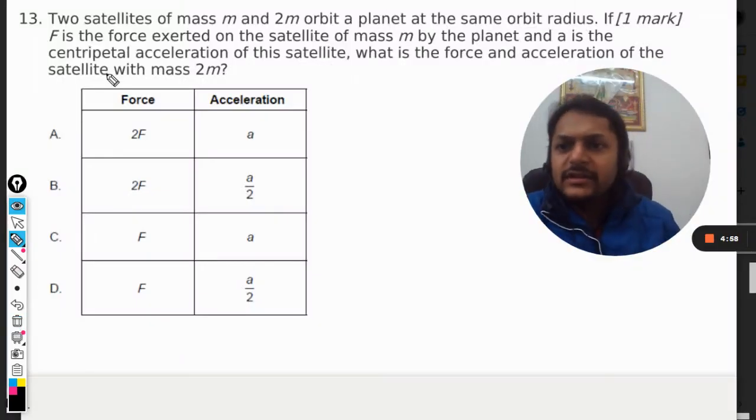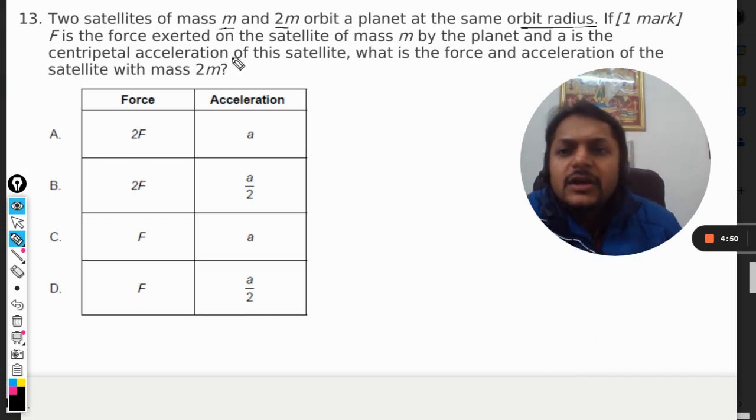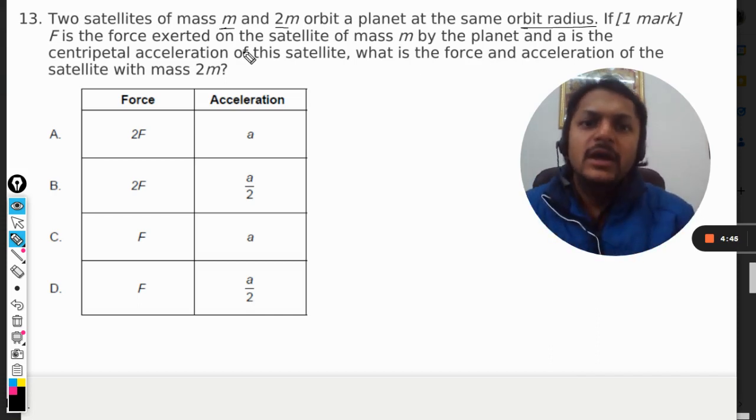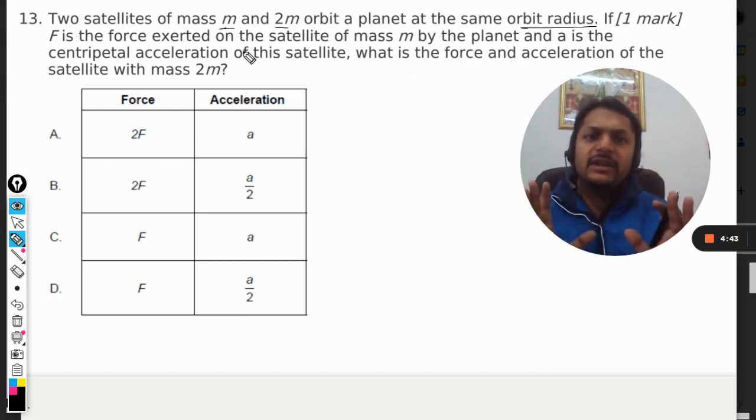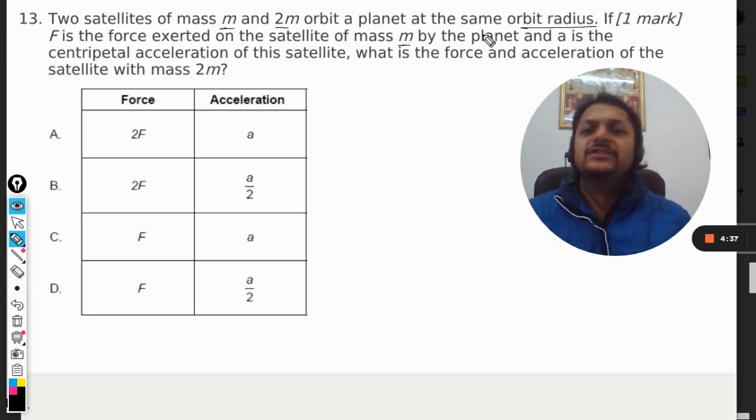Okay dear students, let us see what is there in this question. Two satellites of mass m and 2m orbit a planet at the same orbit radius. They're talking about two different satellites, one is mass m, another is 2m, and they are having the same radius. F is the force exerted on the satellite m by the planet and a is the centripetal acceleration of that planet.